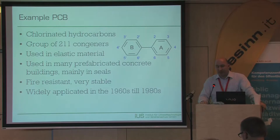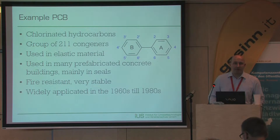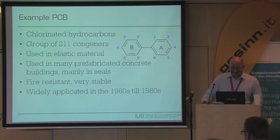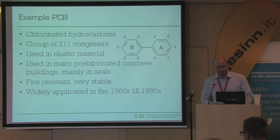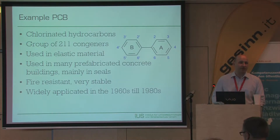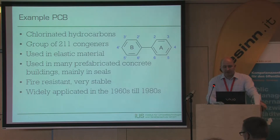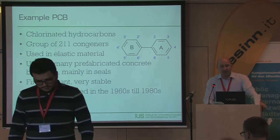Going a little bit chemical now: PCB is not a sole chemical but a group of 209 to 211 different congeners, because there are many components inside. This makes the analytics quite complicated. As already mentioned, it is used in elastic materials. The good thing about these chlorinated hydrocarbons is that they are fire resistant to a very high degree, which is why they were so widely adopted.